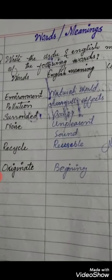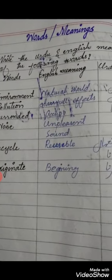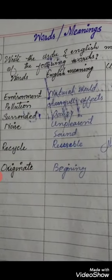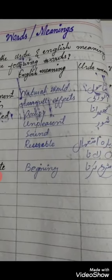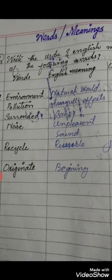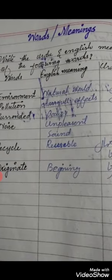Number 1 is Environment — English meaning: Natural world; Urdu meaning: Mahol. Number 2 is Pollution — English meaning: Harmful effect; Urdu meaning: Alud ki. Number 3 is Surrounded — English meaning: Occupy; Urdu meaning: Gherna.